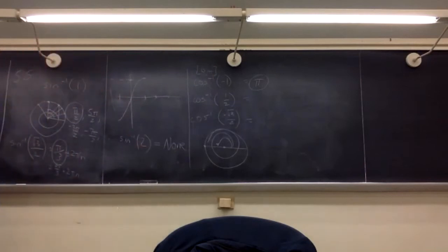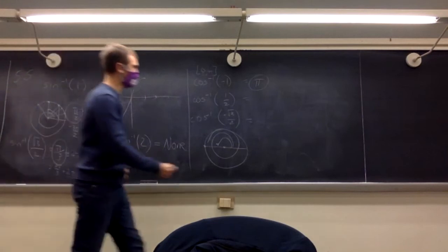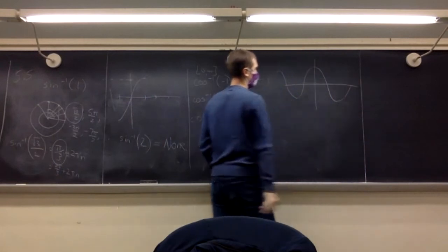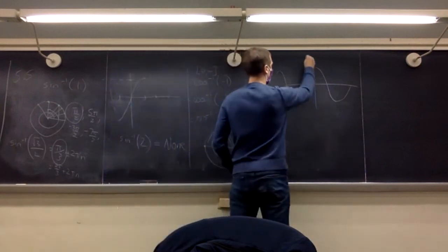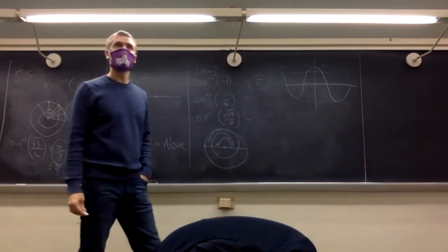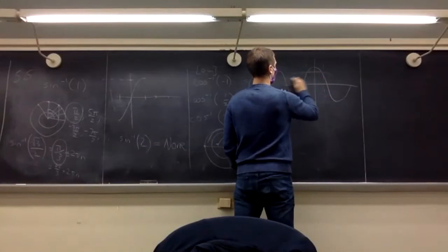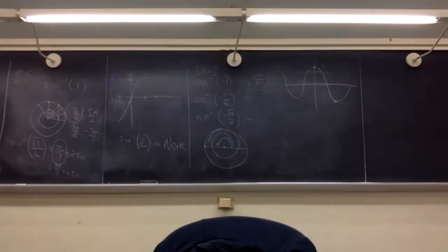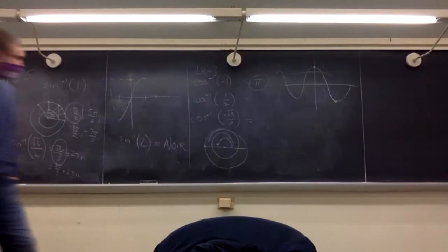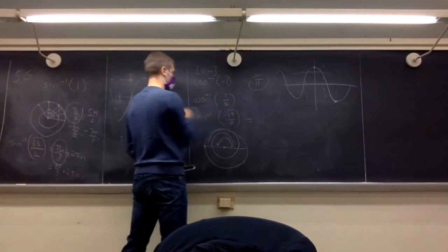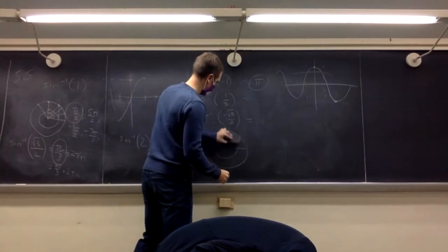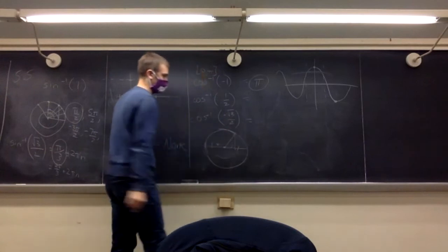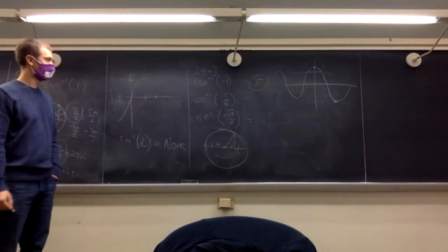For cosine, if you pick an interval centered at zero, it doesn't pass the horizontal line test. So they push it over to 0 to pi. So we pick pi for cosine inverse of negative 1. For cosine inverse of one half, what angle gives an x-coordinate of one half? That's pi over 3.